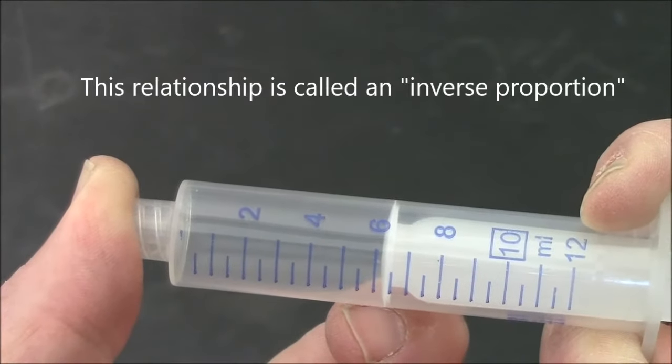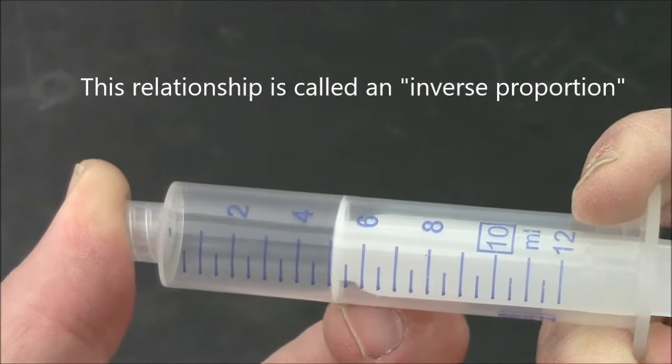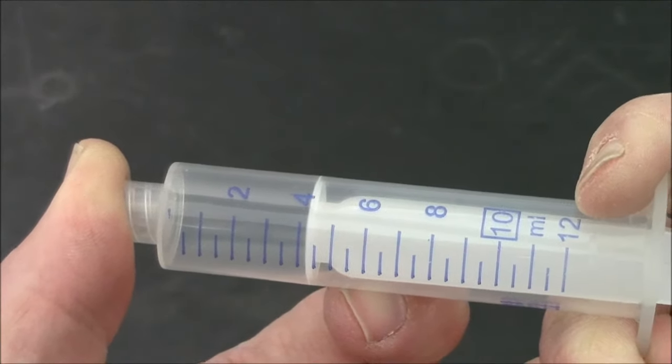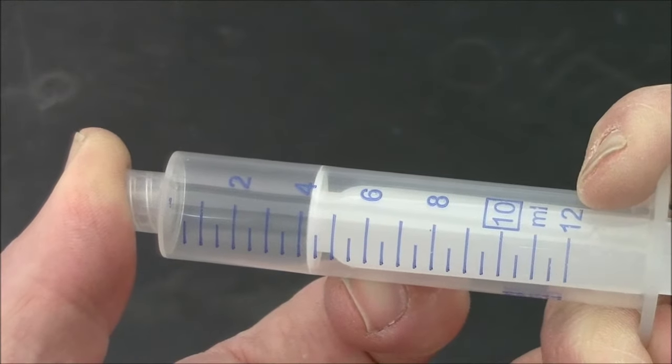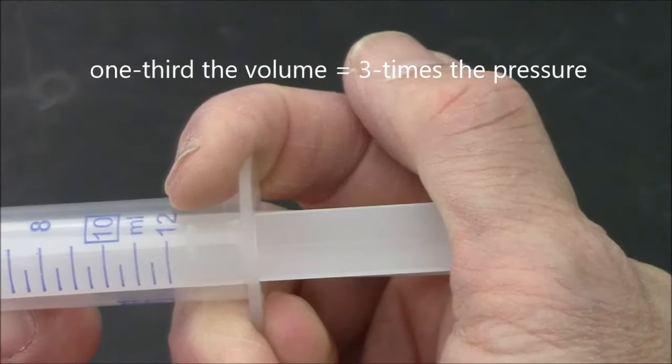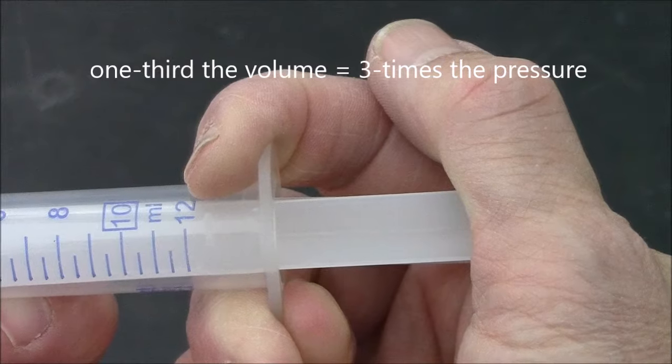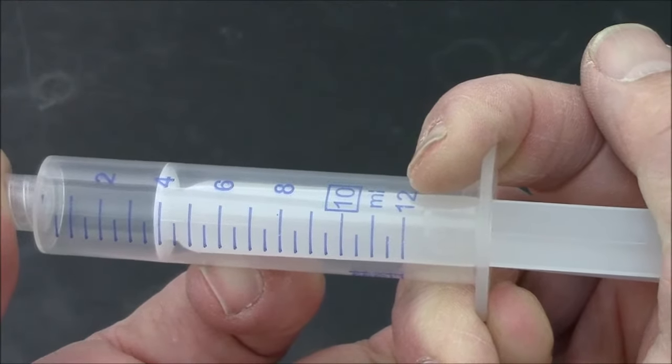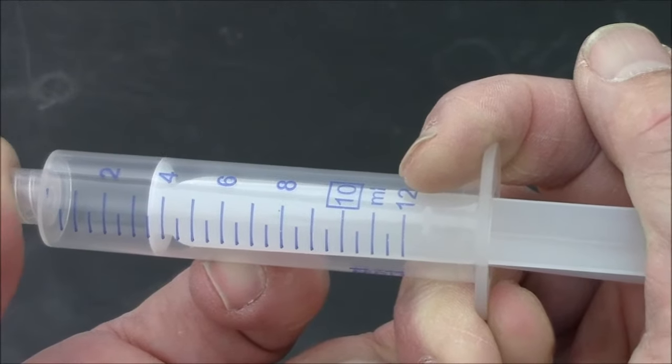Now I'm starting to compress the gas and the air fights back, so it gets difficult to push the plunger in. As the volume shrinks, the pressure rises. So now we're at about half the original volume, which makes the pressure doubled. It's now two atmospheres.